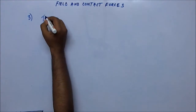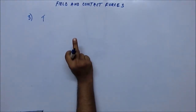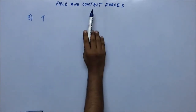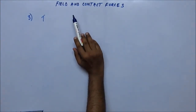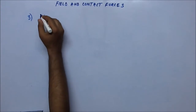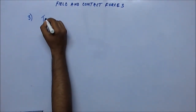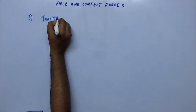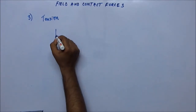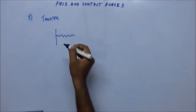The third kind of force is again a contact force. We have seen field force, which is gravitational force acting from a distance. A contact force acts when surfaces come in contact. So gravitational force is a field force, normal reaction is a contact force, and tension is the third kind of force — also a contact force. In physics, tension means force.